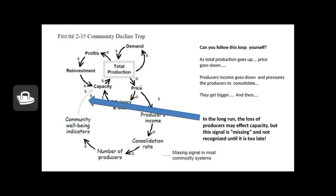As consolidation rate increases, the number of producers goes down, moves in the opposite direction. As number of producers go down, community well-being indicators go down. That is, health care and education, schools and cultural events in the community are dropping. And theoretically, as community well-being goes down, capacity will go down eventually. The problem here is that we don't see it and we often don't pay attention.